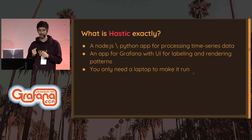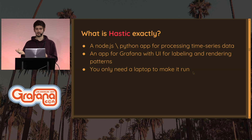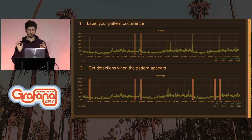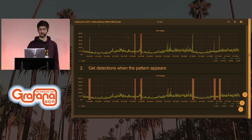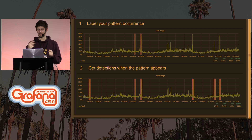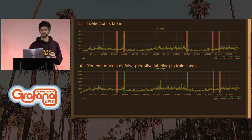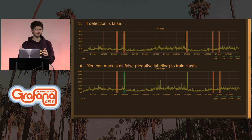Lechastic is an application which consists of two parts: a Python app plus Node.js, and an app for Grafana. It is very light. It is a dashboard — look at this. You have a metric and you can label a pattern there, then you send it and you get predictions. Each time this pattern appears you get an alert. If the detection is false, you can label it, and the system learns not to detect that pattern again.